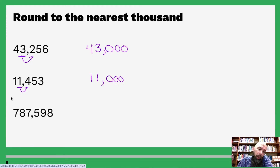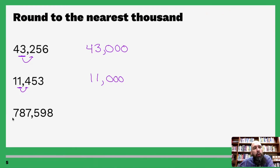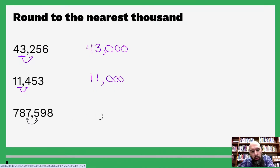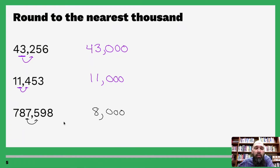Round to the nearest thousand one more time — ones, tens, hundreds, thousands. Move to the right — five or above, give it a shove! Let's turn these three numbers into zeros: one, two, three. Since five is five or above, we give seven a shove and turn that seven into eight. That eight comes along for the ride, and that other seven also comes along.